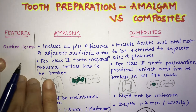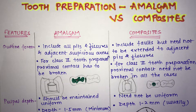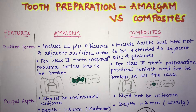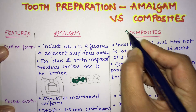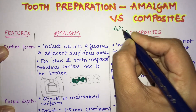In amalgam, we follow the fundamental steps: outline form, resistance form, retention form, and convenience form. In composites, you should always remember that composite depends on the principle of drill and fill — you're just drilling out the caries and then filling it with composite.